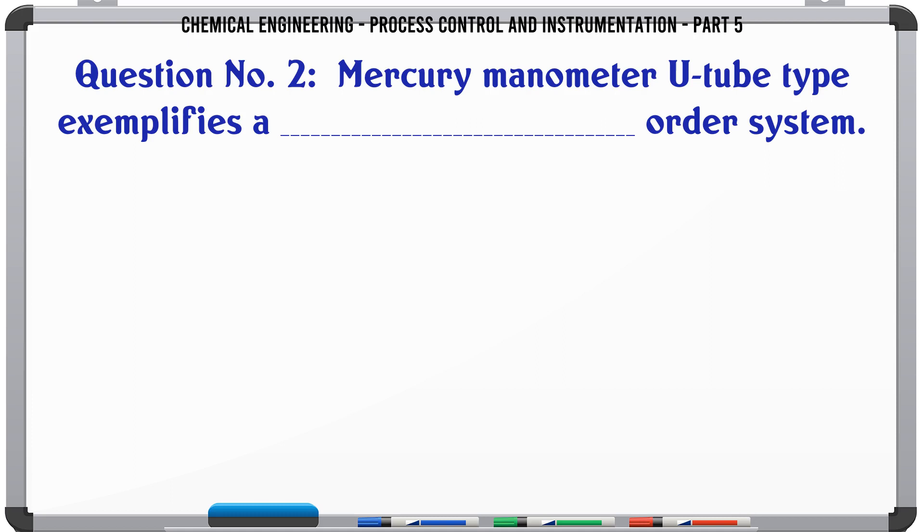Mercury manometer U-tube type exemplifies a order system. A. 0. B. 1st. C. 2nd. D. 3rd. The correct answer is Second.